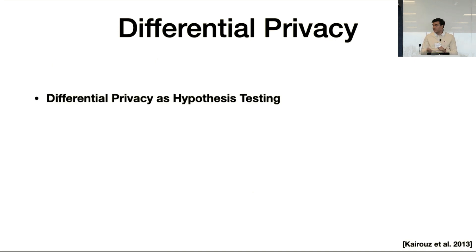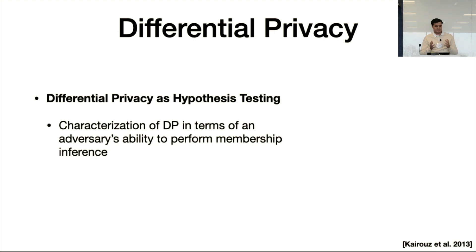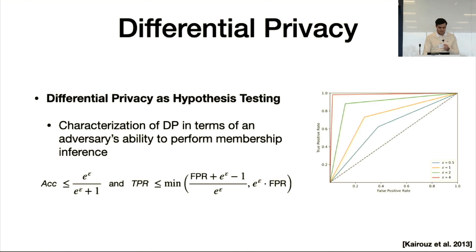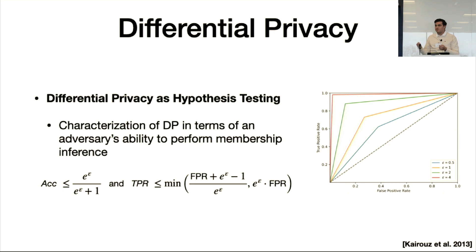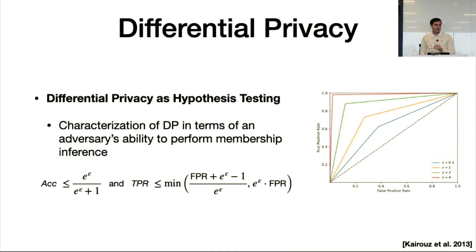A convenient way to think about DP was introduced by Kairouz et al. in 2013. They show a characterization of differential privacy in terms of an adversary's ability to perform membership inference attacks. This work gives bounds that directly relate the balanced accuracy and true positive rate of the membership inference adversary to the privacy parameter epsilon. On the right, we can see ROC curves representing these upper bounds as a function of different values of epsilon.